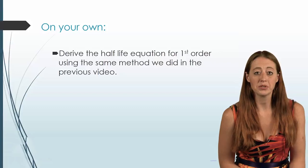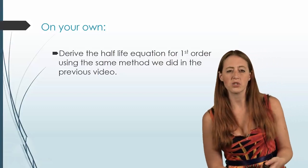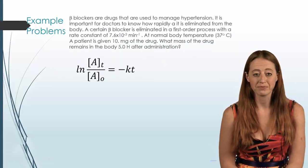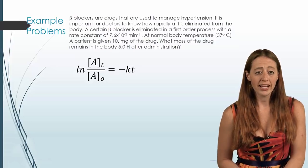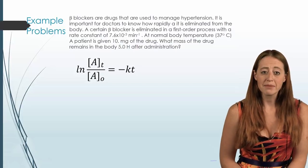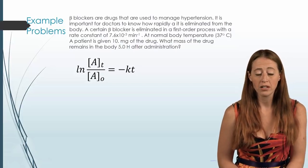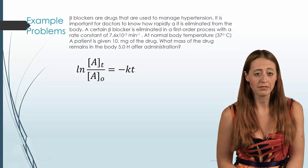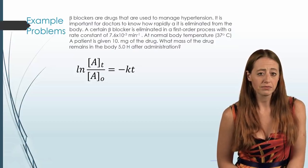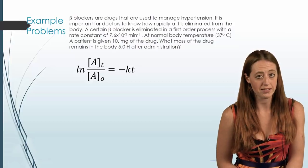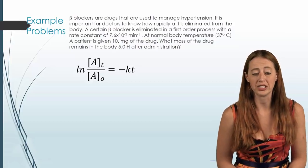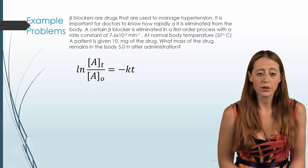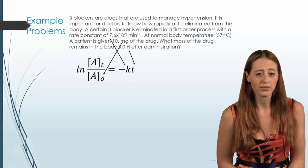Now let's do a couple of examples. Beta blockers are a drug used to manage hypertension, and it's important for doctors to know how much is used up over a particular amount of time — typically in the medical field, everything is discussed in terms of half-life. I tell you that it's eliminated in a first order process, which tells you which equations to use: the first-order integrated rate law. Do we have an initial concentration? We sort of do.